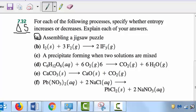In part A, assembling a puzzle decreases entropy. So the sign of delta S is negative.